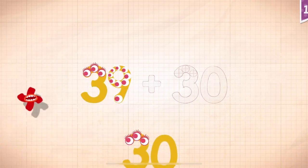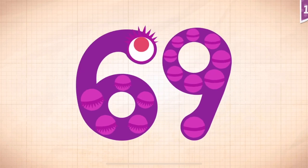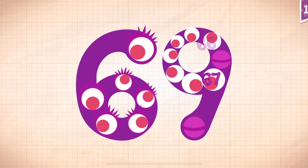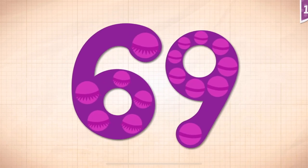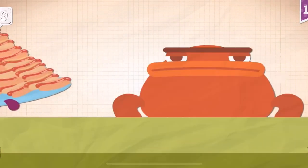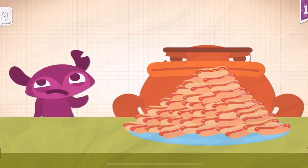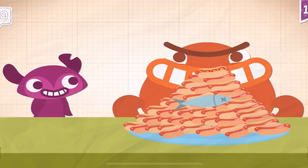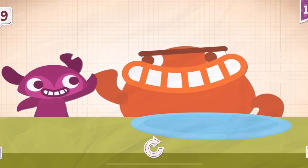39 plus 30 equals 69. 10, 20, 30, 40, 50, 60, 61, 62, 63, 65, 66, 67, 68, 69. Grumpkin broke the record by eating 69 hot dogs.